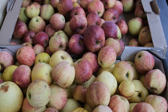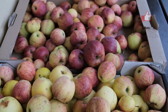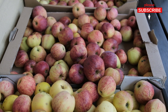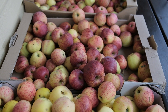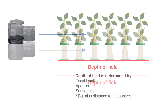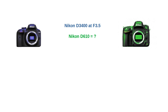Next, let's move on to the depth of field, which refers to how much of the image is in focus. A shallow depth of field means that only a small portion of the image is sharp, while a deep depth of field means more of the scene is in focus. Depth of field is affected by three factors: focal length, aperture, and sensor size. Since the full-frame sensor on the Nikon D610 is larger, it naturally gives a shallower depth of field compared to the crop sensor on the Nikon D3400, even when using the same aperture.